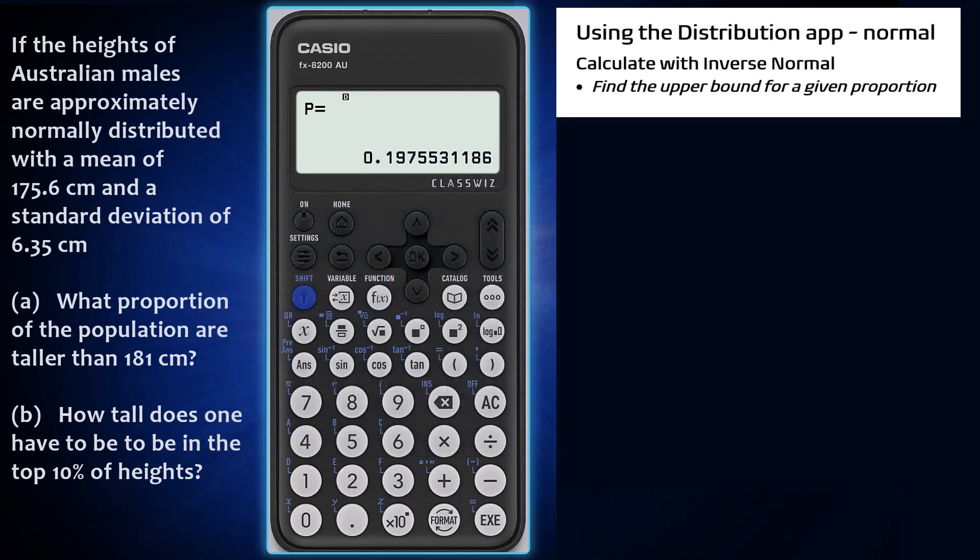The distribution app of a Casio FX-8200 AU can be used to calculate the upper bound for a given proportion for any normal distribution. This is sometimes known as an inverse normal calculation. In this question, it can be used to find the upper boundary of the bottom 90 percent of heights, which is equivalent to finding the lower boundary of the top 10 percent of heights, which is what is called for here.